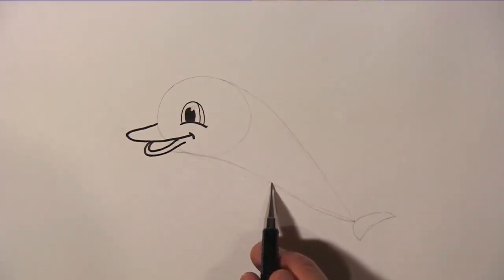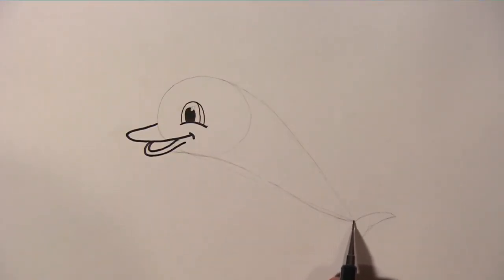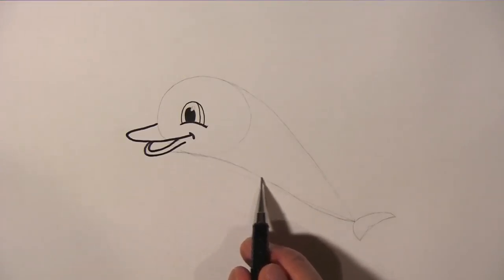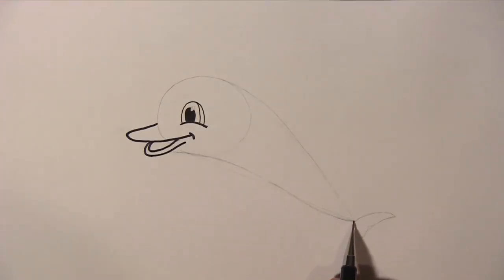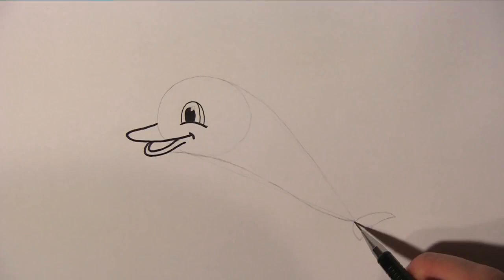From the dolphin's lower beak, draw a curved line all the way towards the tail fluke. And draw the fluke like this.